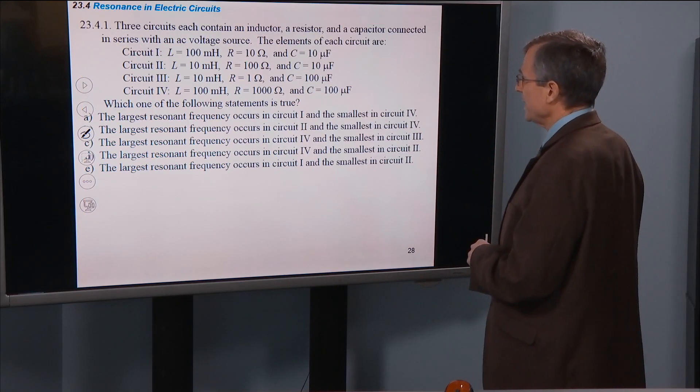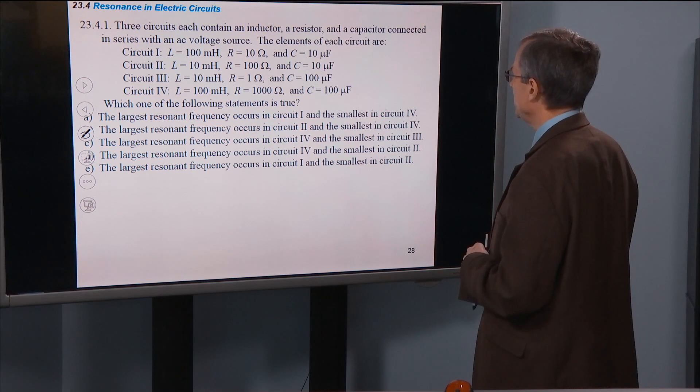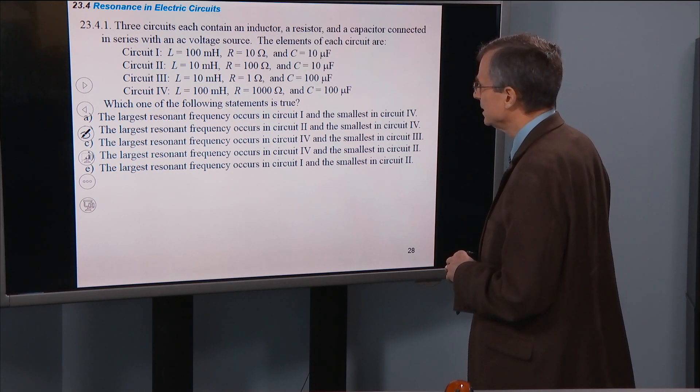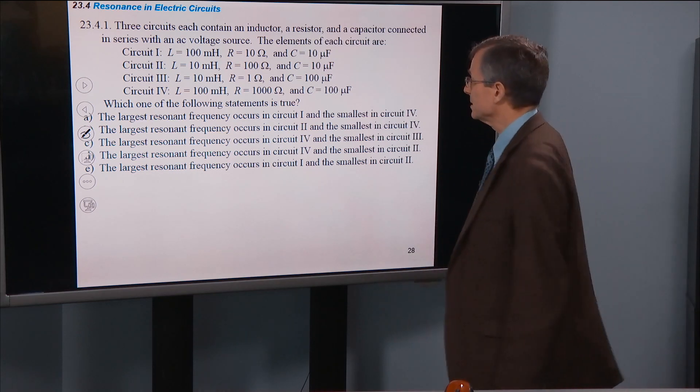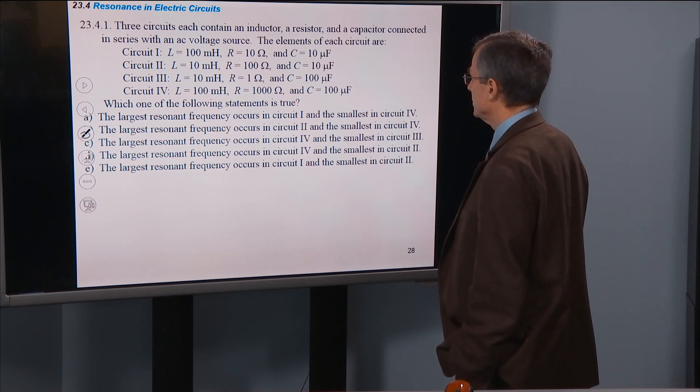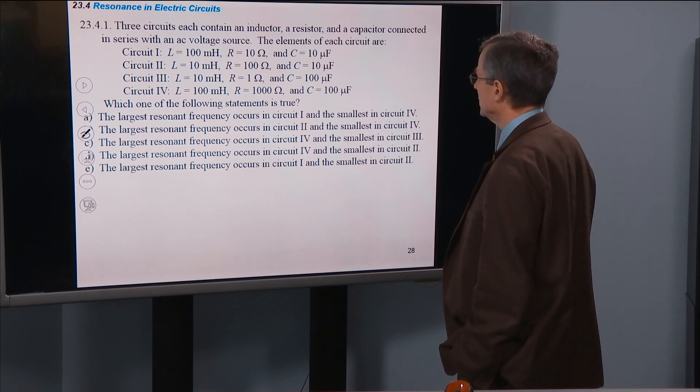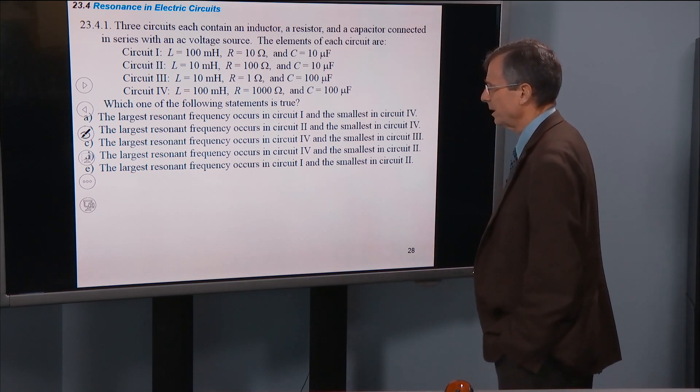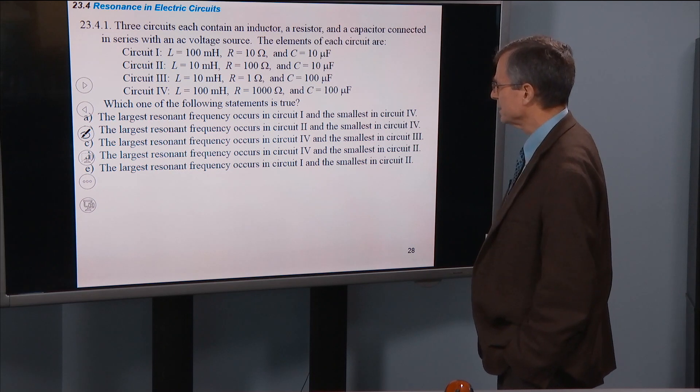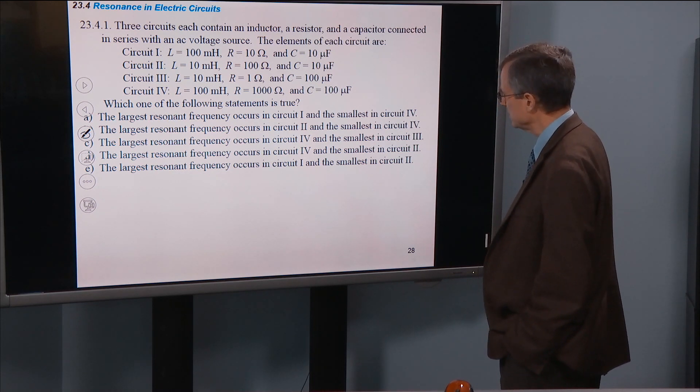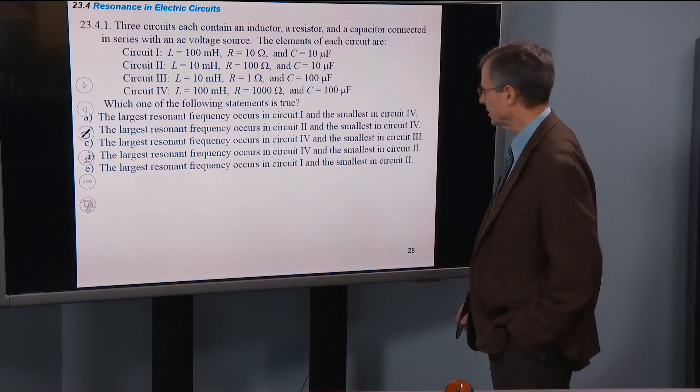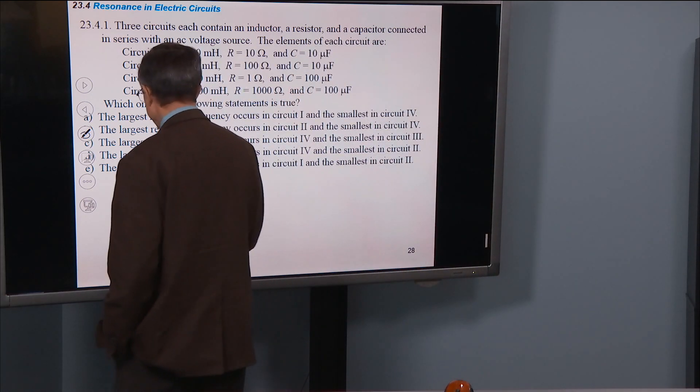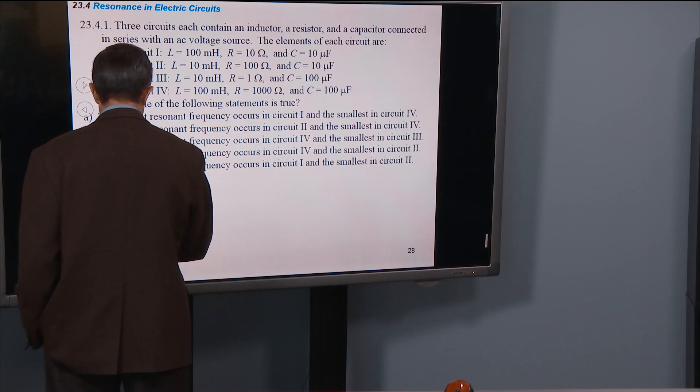So that's resonance. A quick example, three circuits, each containing an inductor, a resistor, and a capacitor, connected in series, so these are series RLC circuits, with an AC voltage source. The elements of each circuit are L, R, and C, et cetera, for all three, all four circuits. Which one of the following statements is true? The largest resonant frequency occurs in circuit one, and the smallest in circuit four. Well, we want to find those resonant frequencies. What is the equation for it?